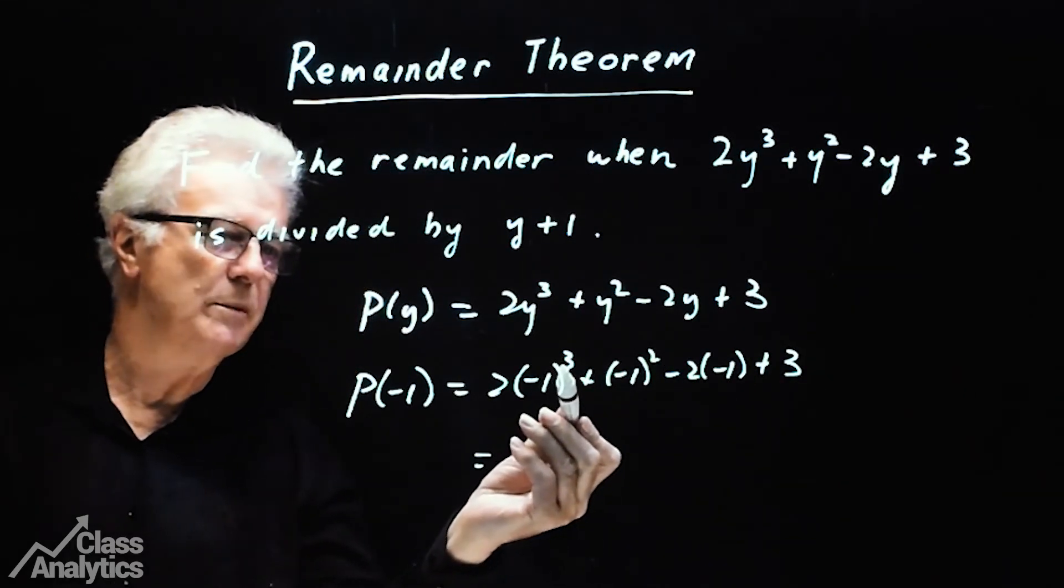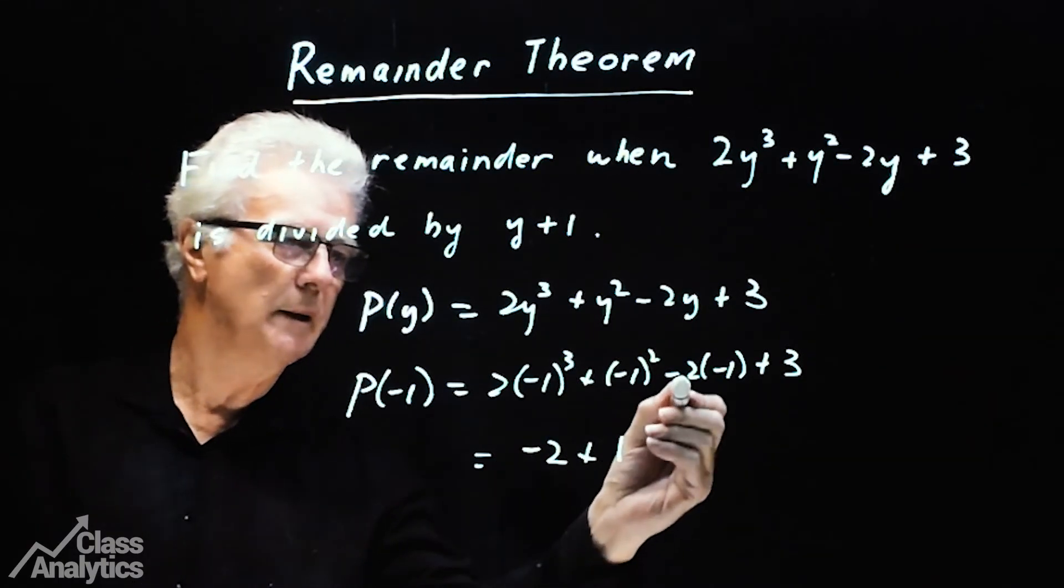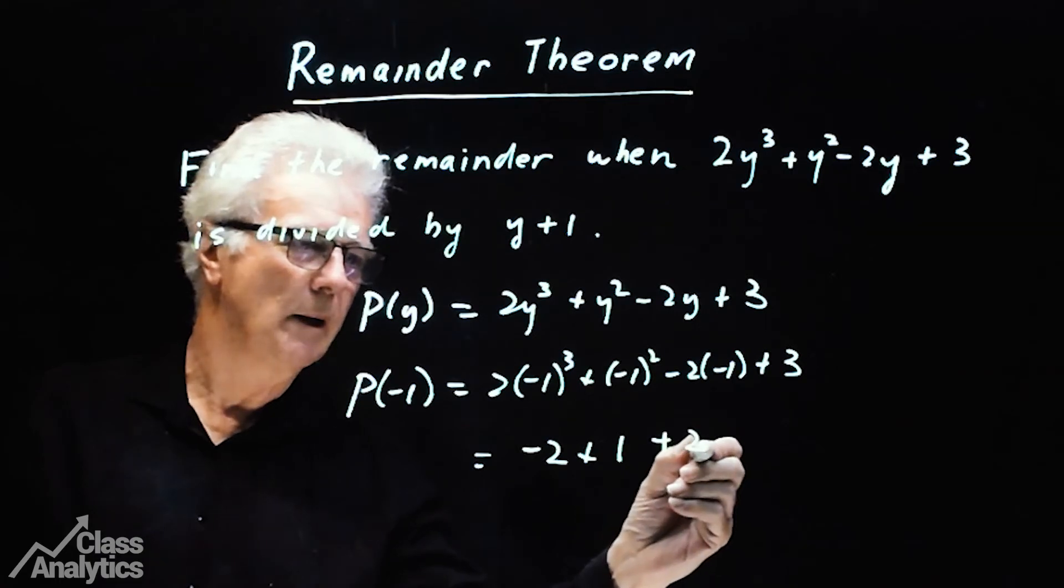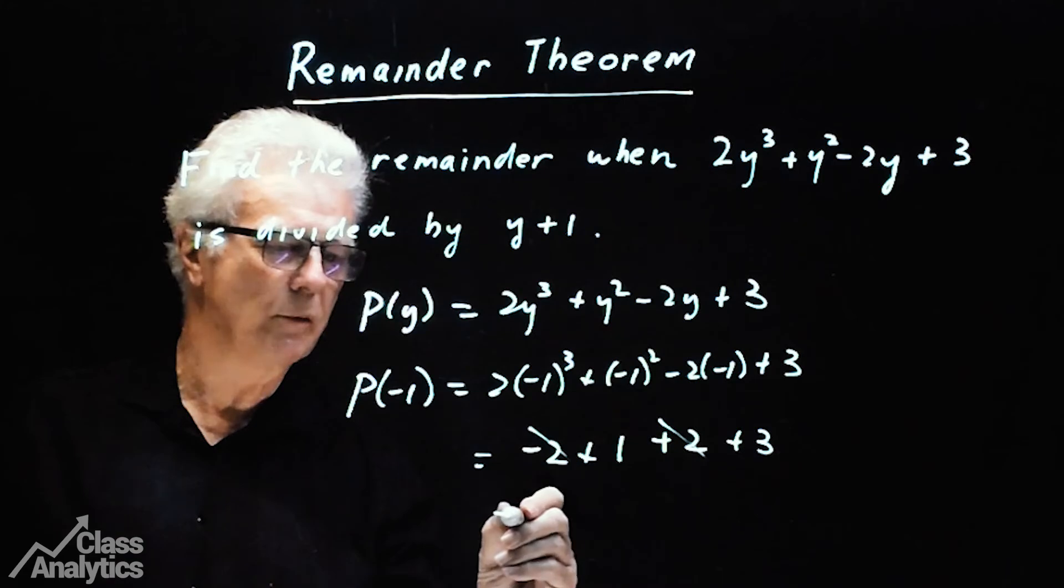And that will give us minus 1 cubed, this gives us minus 2. This gives me 1. This gives me plus 2. And we've got plus 3. These terms cancel out. And we get the remainder equal to 4. Done.